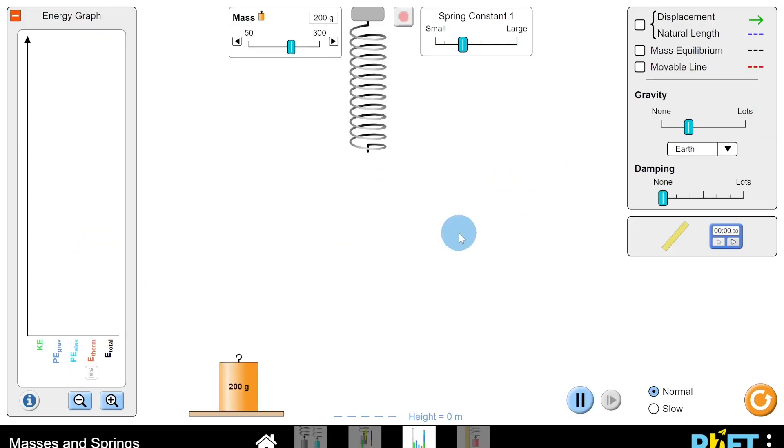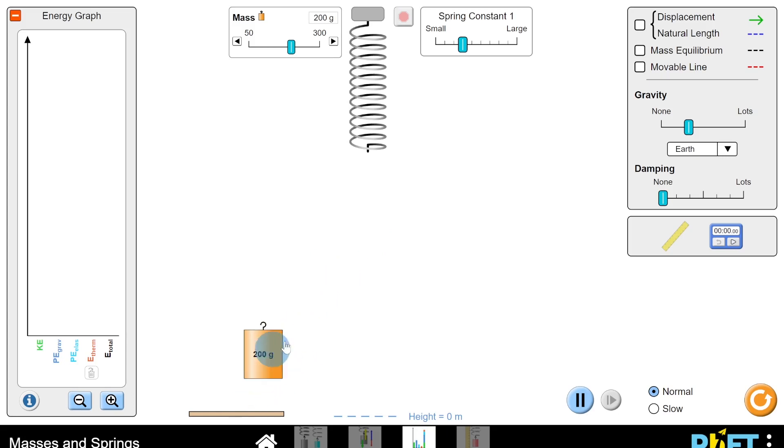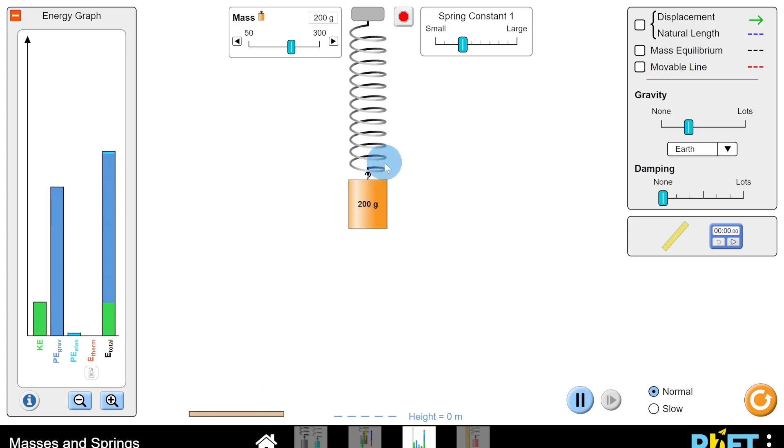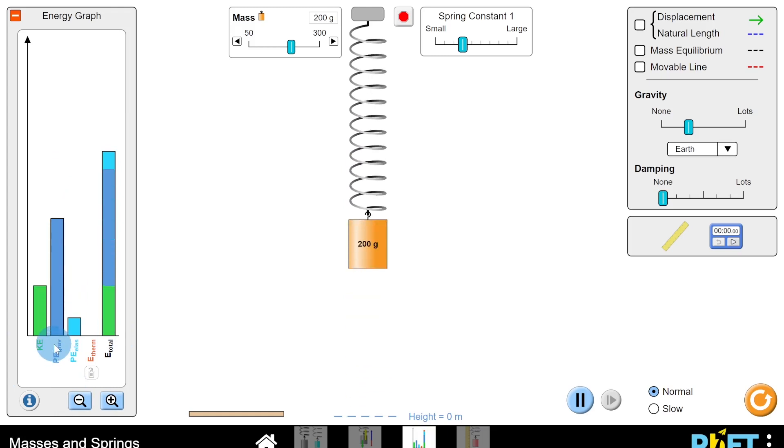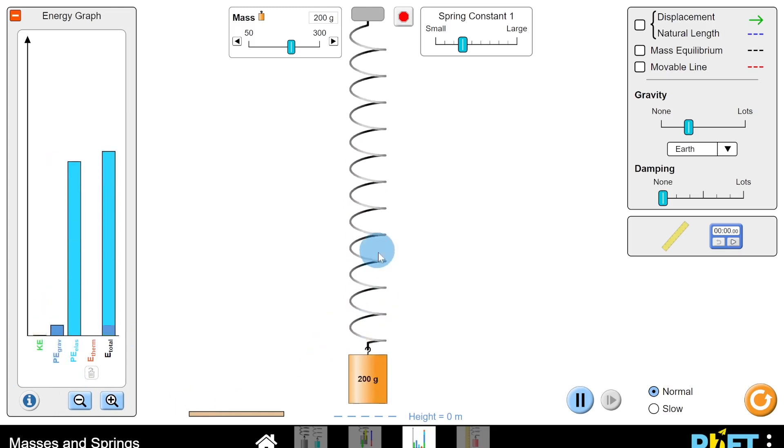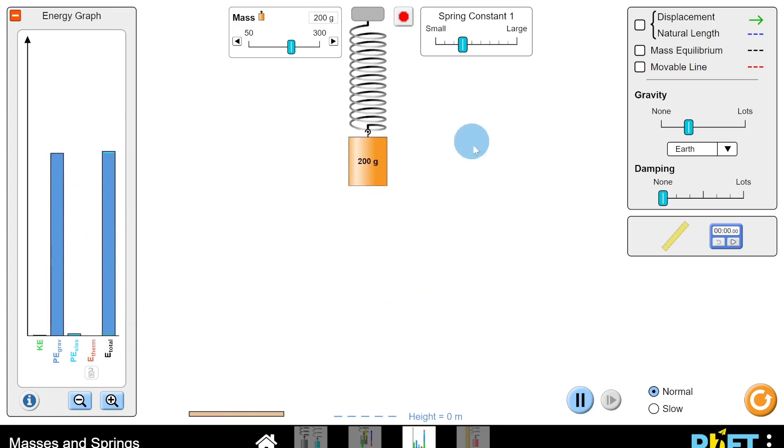Now we can also visualize this conversion of energies by looking at the mass on a spring example of SHM. If we put this mass of 200 grams on the spring where there's no damping, then we can see that the energy will convert between kinetic energy but also two types of potential energy as well in this case. And these are gravitational potential energy because the object is raised above the ground and also elastic potential energy in the spring.